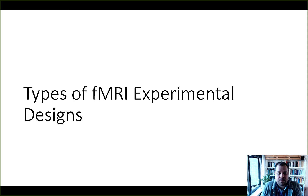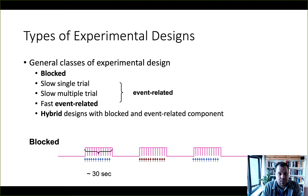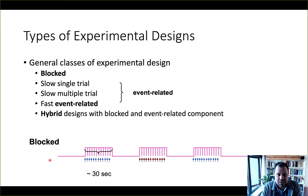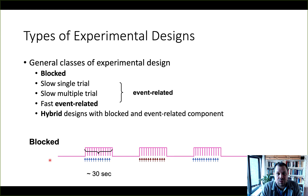In this video we'll talk about the different types of fMRI experimental designs that are commonly used today. Those include block designs, which historically were among the first types used, slow single trial designs, slow multiple trial designs, and fast event-related designs. Event-related designs focus on single events and alternate between different conditions, such as a decision in a trust game followed by a decision in a control risk game.